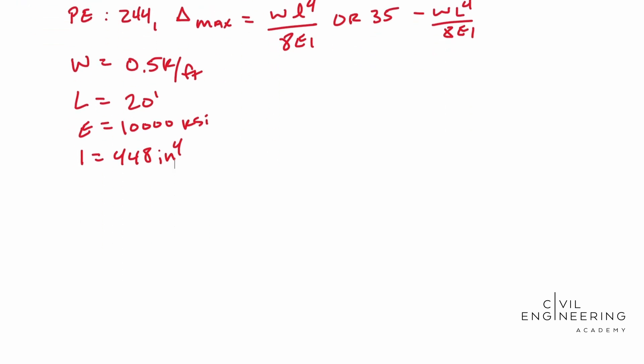Let's scroll down and let's solve for this guy. Deflection at B: 0.5 kips per foot. Write your units out. Good reminder. Write your units. You can get lost. This is plug and chug right now. 8 times 10,000 KSI times 448 inches to the fourth.